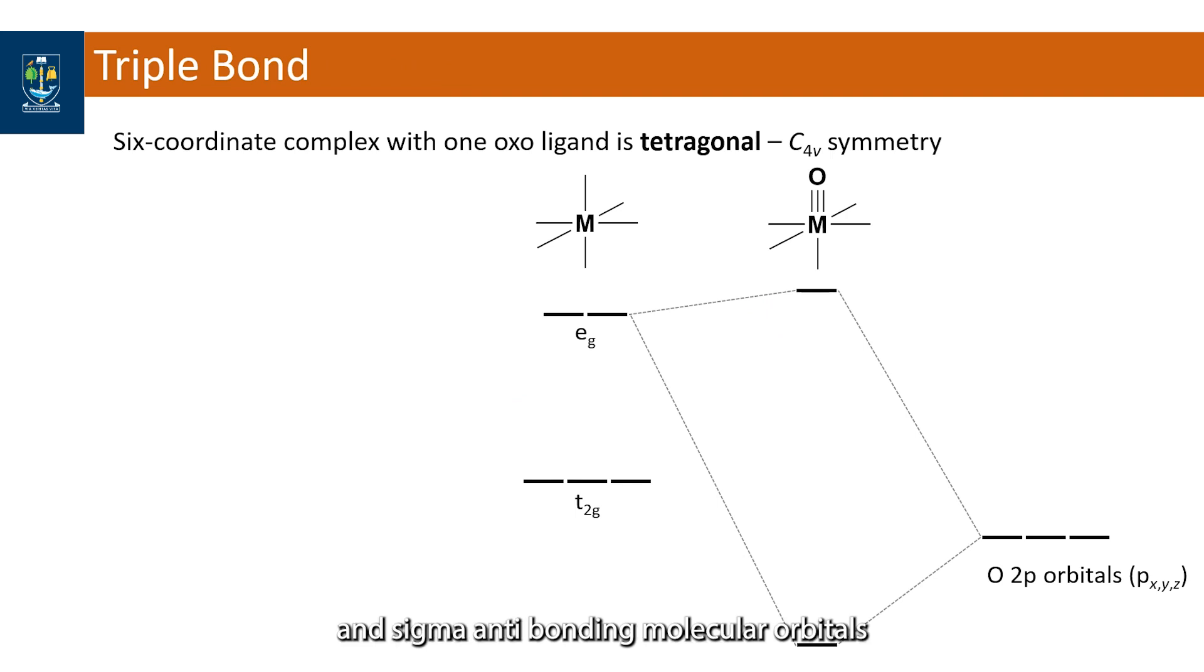A sigma bonding and sigma antibonding molecular orbitals are added to the scheme being the most stabilized, the lowest in energy, and the most destabilized, the highest in energy in the MO scheme.